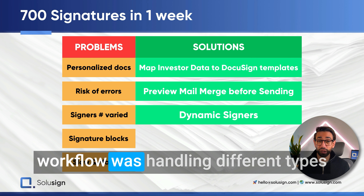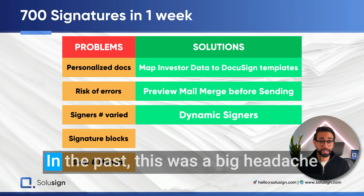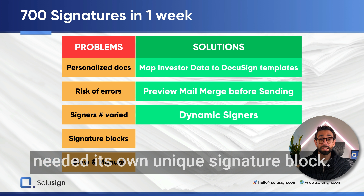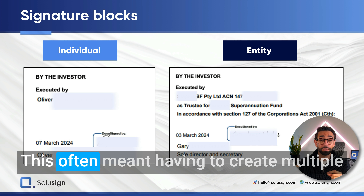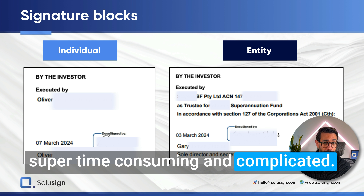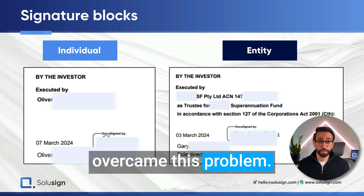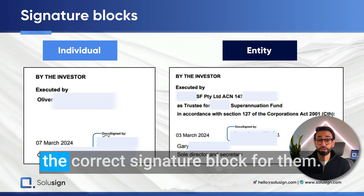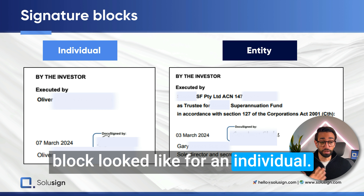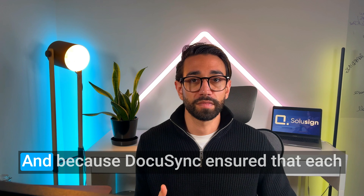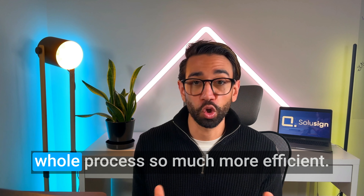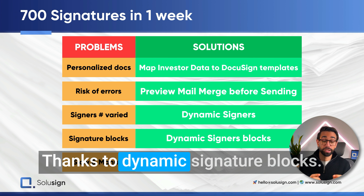Another major challenge was handling different types of signature blocks in the document. In the past, each type of signer — an individual, a trust, or a company — needed its own unique signature block, which often meant creating multiple templates, one for each scenario — super time-consuming and complicated. But with SoluSign, the system identifies the type of signer and automatically generates the correct signature block. On the left is what the signature block looks like for an individual, and on the right for a company — thanks to dynamic signature blocks.